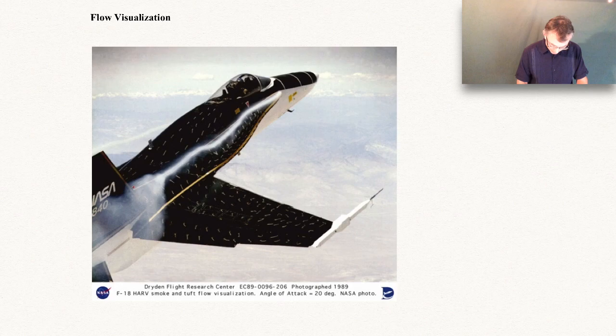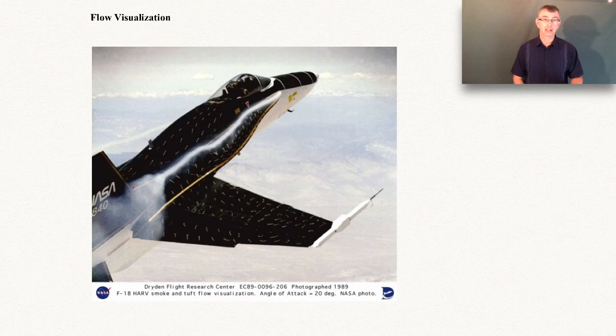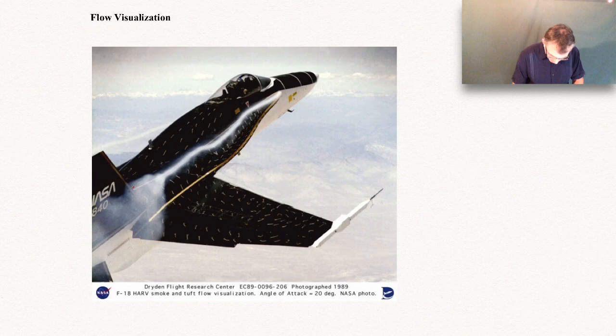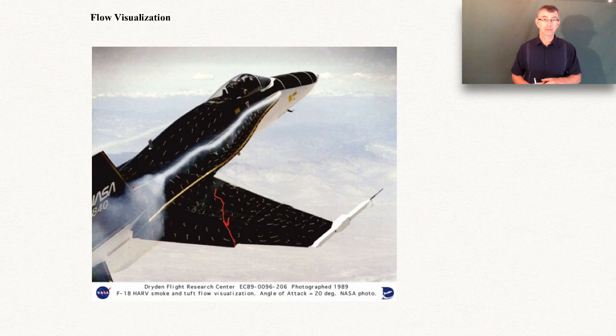The other technique uses little tufts of string glued onto the surface of the aircraft, giving the local velocity direction on the surface — they're pointing in the direction of the local velocity vectors. If you draw a line starting at some tuft that stays tangent to all the tufts, that traces out an example of a streamline. So two different techniques here: streakline and streamline.